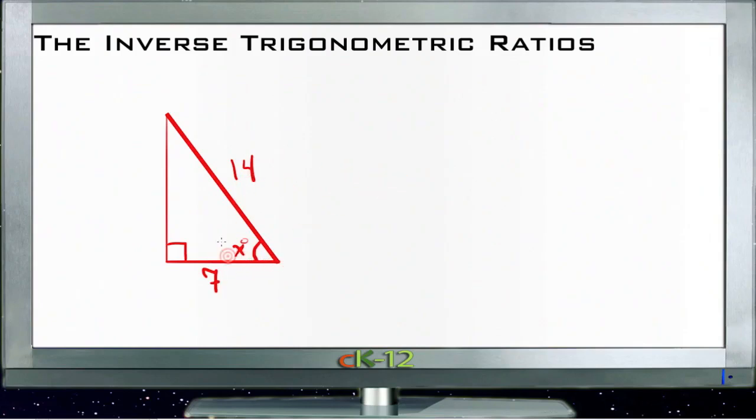Based on what we've done a couple of lessons ago, we should be able to find the sine of X relatively easily. We know that sine, based on our SOHCAHTOA, if we call our missing side here Y, the sine of X degrees would be opposite over hypotenuse. So that would be Y over 14.